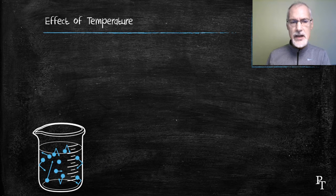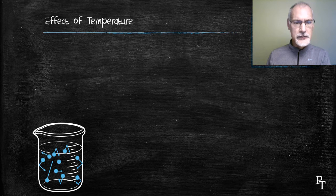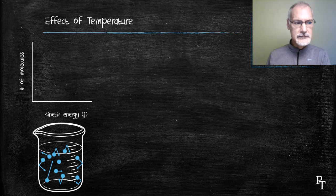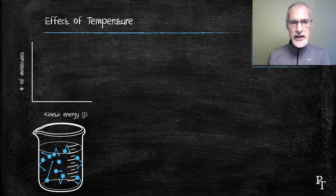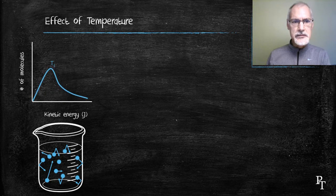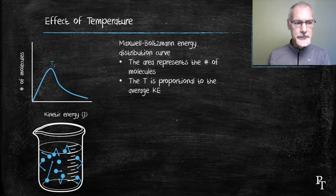What about the effects of temperature? Consider a beaker containing a host of reactant particles moving around. They have a variety of different speeds and kinetic energies as they move. I'm going to show this on a graph, with the number of molecules on the left axis and kinetic energy on the right axis. Here I generate a histogram showing the population of various kinetic energies. I'm going to replace this histogram with a line, often referred to as a Maxwell-Boltzmann energy distribution.